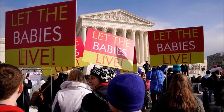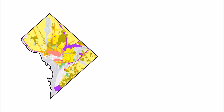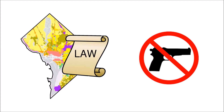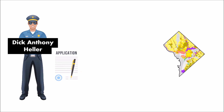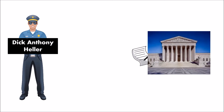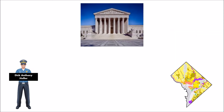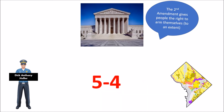The final case is McDonald v. Chicago, which also uses the due process clause. But first we need to understand District of Columbia v. Heller. The District of Columbia had a law banning firearms, with exceptions for licensed police officers. Officer Dick Anthony Heller applied for a license but was rejected, so he filed a lawsuit. The Supreme Court heard his case: Heller argued the D.C. law violated the Second Amendment, while D.C. argued the Second Amendment did not guarantee the right to own a gun. The court ruled five to four that people are granted the right to own a gun under the Second Amendment, to an extent.